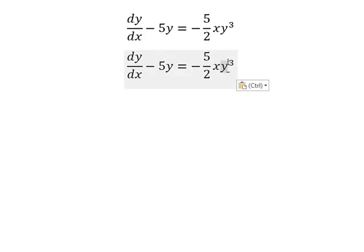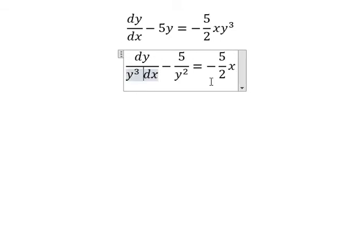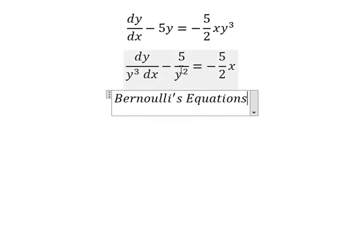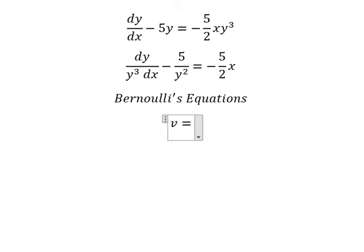We divide both sides by y to the power of 3. We can use Bernoulli's equation because we have 1 over y squared and dy over y to the power of 3 dx. So I will put v equals to negative 1 over y squared.